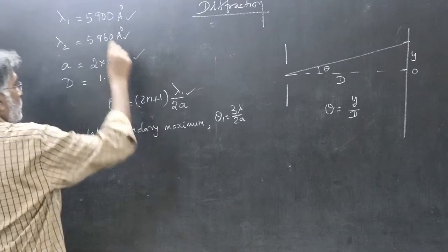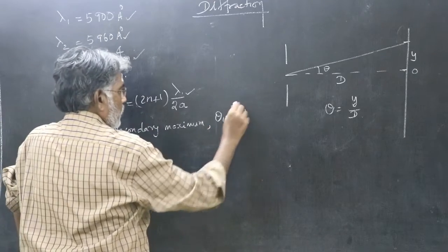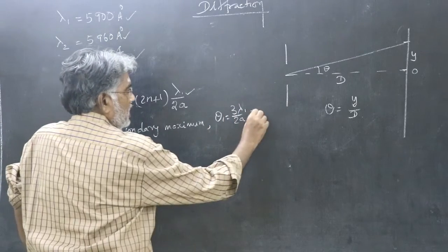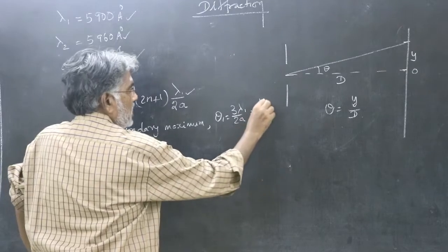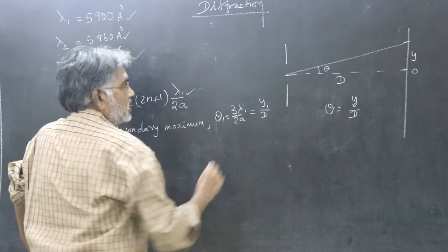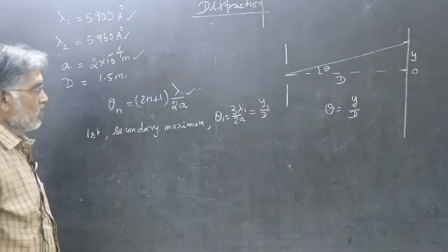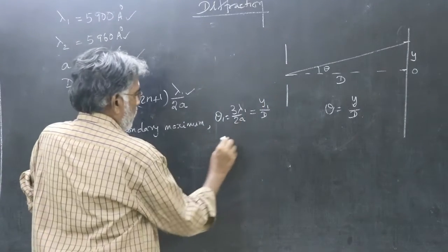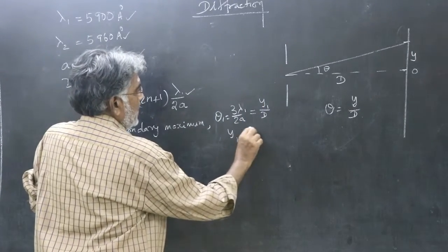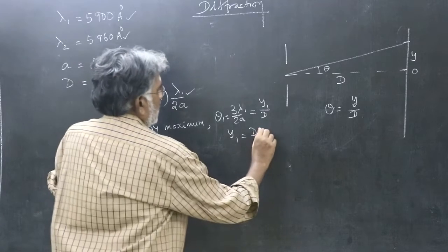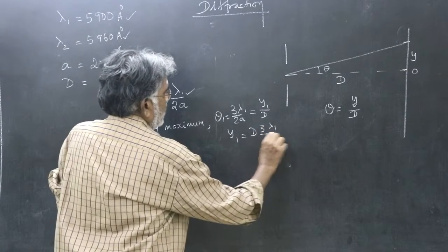For one wavelength, first wavelength, 3 lambda 1 by 2a. But theta is y by D. So, here, you write y1 by D. The corresponding value of y. So, what will be y1 then? y1 will be D into 3 lambda 1 by 2a.